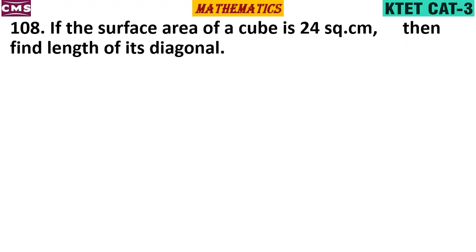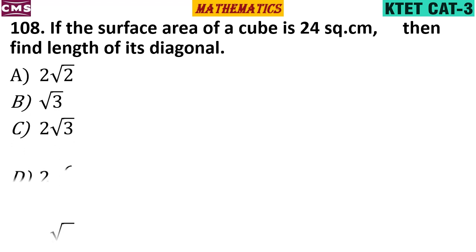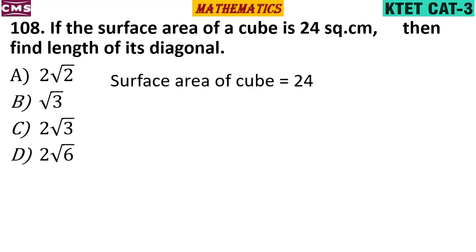If the surface area of a cube is 24 cm², find the length of its diagonal. The cube surface area formula is 6a squared equals 24, so a squared equals 4, giving a equals 2.